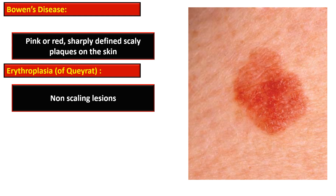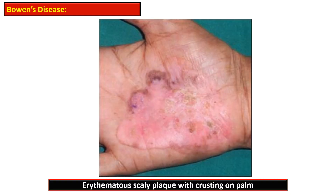Erythroplasia of Queyrat presents as a non-scaling lesion and is erythematous, as seen in this picture. This picture shows the erythematous scaly plaque with crusting.